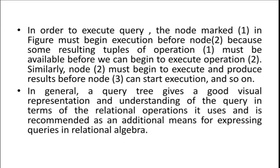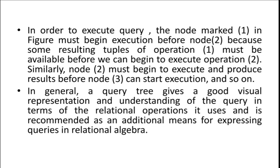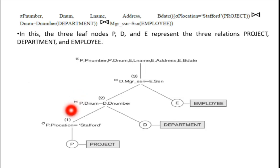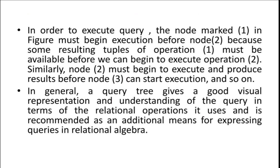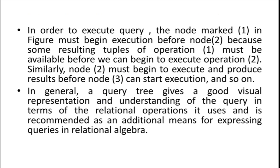In order to execute the query, the node marked 1 in the figure must begin execution before node 2, because some resulting tuples of operation 1 must be available before we can begin to execute operation 2. The output of node 1 is used as input by node 2. Similarly, node 2 must begin to execute and produce results before node 3 can start execution.